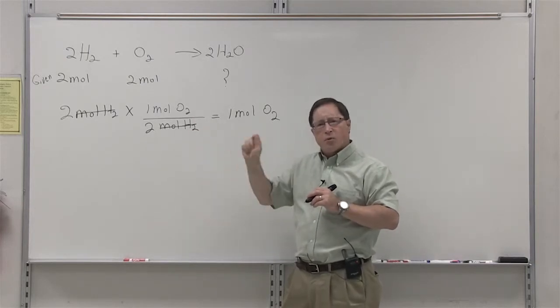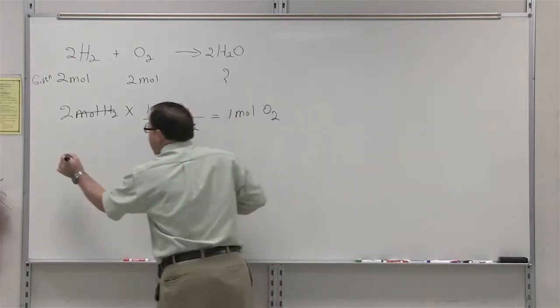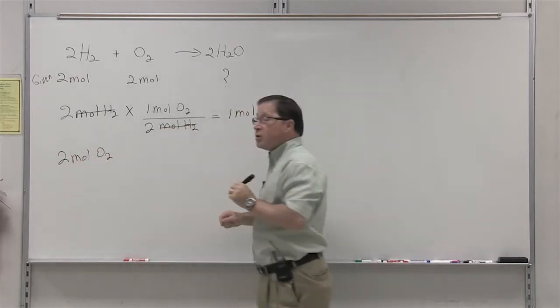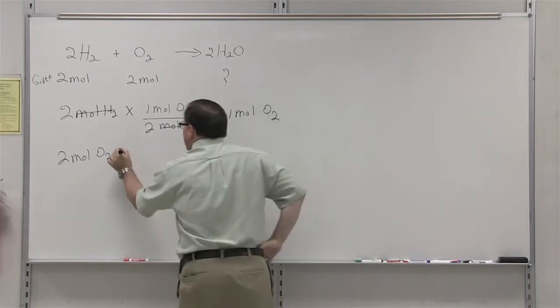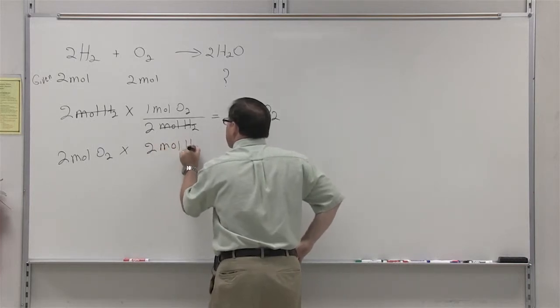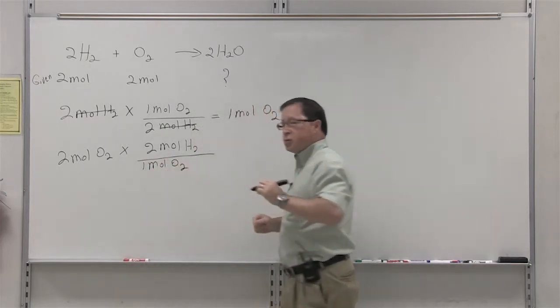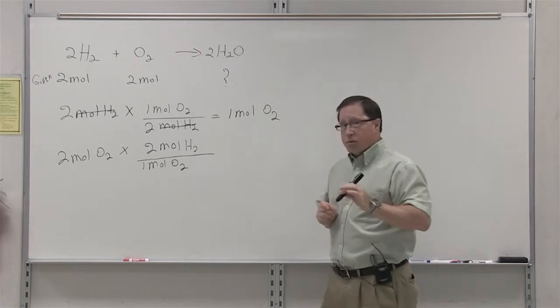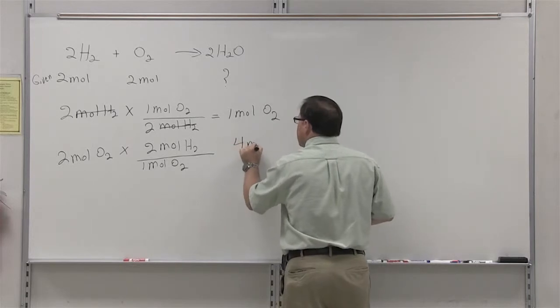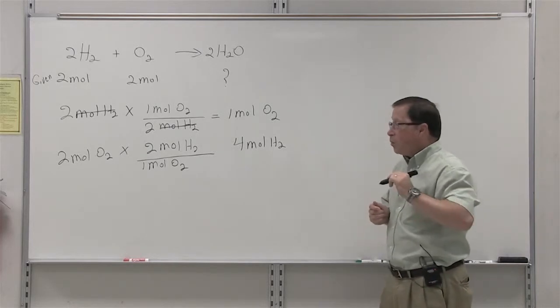Let's look at this from the other perspective. Let's look at it from the oxygen perspective. Again, two moles of oxygen is our starting material, but we're going to change our ratio. Now, we're going to say that we have two moles of hydrogen for every one mole of oxygen. When we do this, we find that we would need four moles of hydrogen to react with two moles of oxygen.